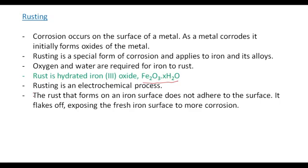The rust that forms on an iron surface does not adhere to the surface. It flakes off, exposing the fresh iron surface to more corrosion. When the oxide forms on iron it flakes off — it doesn't stick to the surface — and it exposes fresh iron for more corrosion to take place.